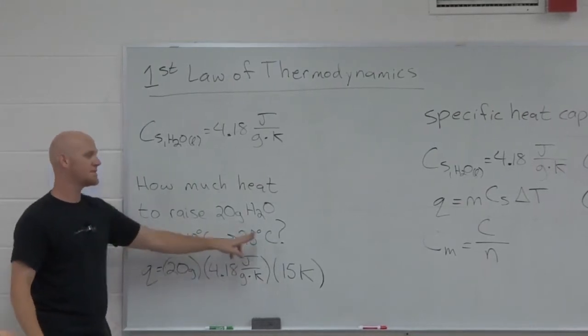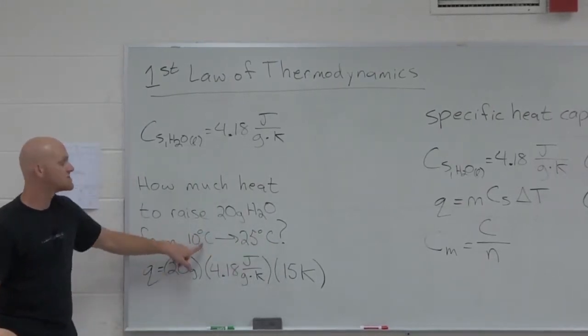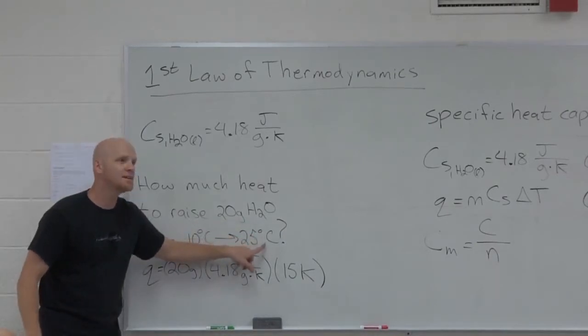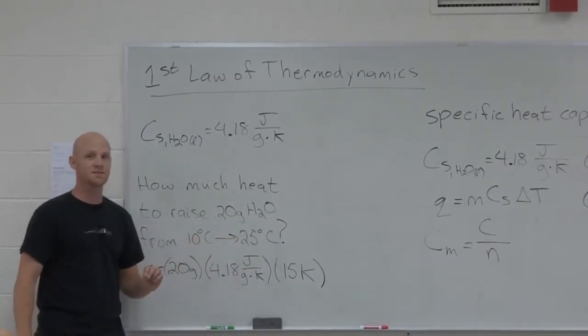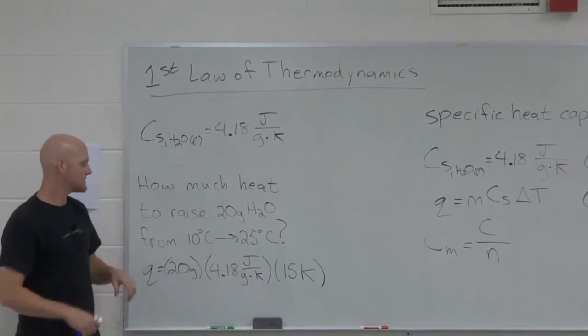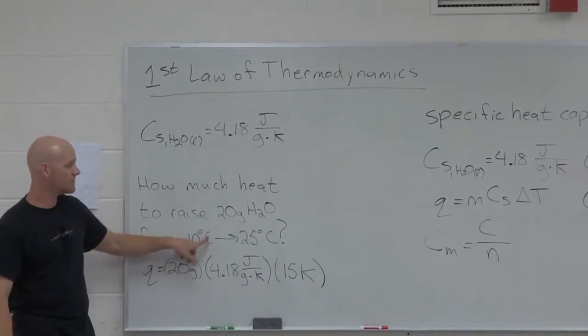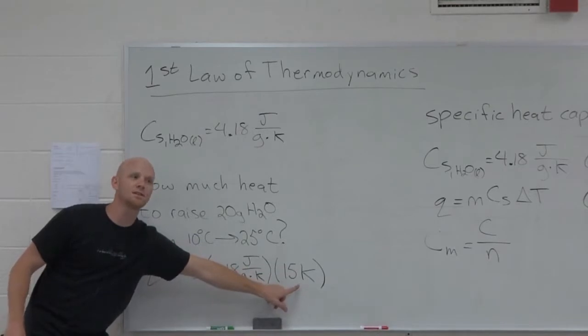Notice 10 to 25 would be the same thing as 283 to 298. You actually convert temperatures, not delta T's, using add 273. So 283 to 298 is still a 15 change.